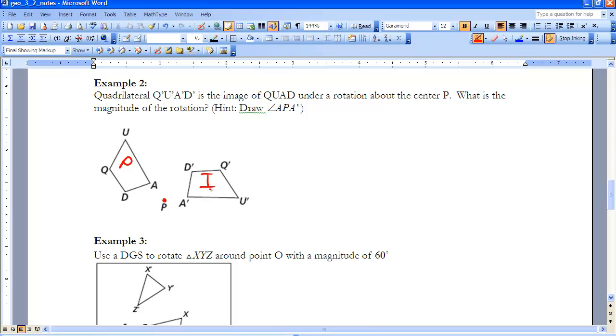What is the magnitude of the rotation? So before I even start measuring anything, I want to look and see the fastest route I can take to get my pre-image onto my image. So if I look at that, the fastest way is to go in a clockwise direction, so I know it's going to have a negative magnitude.